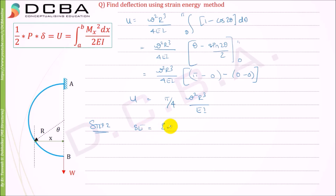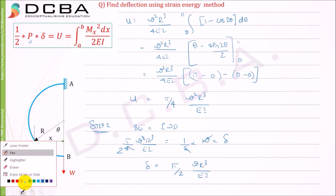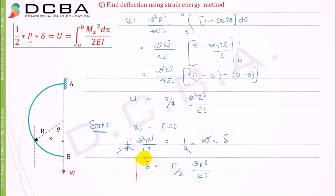Step 2 is equating strain energy to external work done. Setting π·W²·r³ / 4EI equal to (1/2)·W·δ, the W's and the factor of 2 cancel, giving the deflection δ = π·W·r³ / 2EI. This is the deflection of the semicircular cantilever beam loaded at end point B.